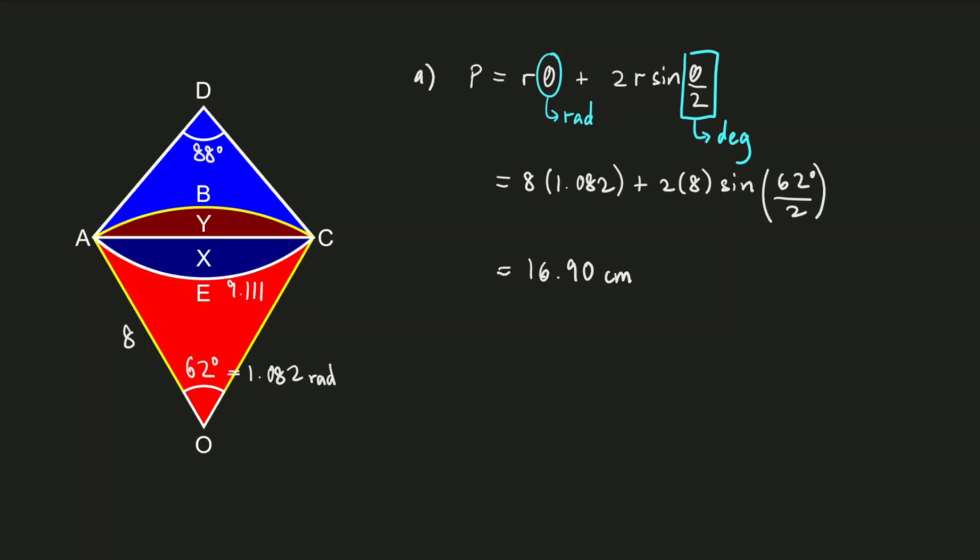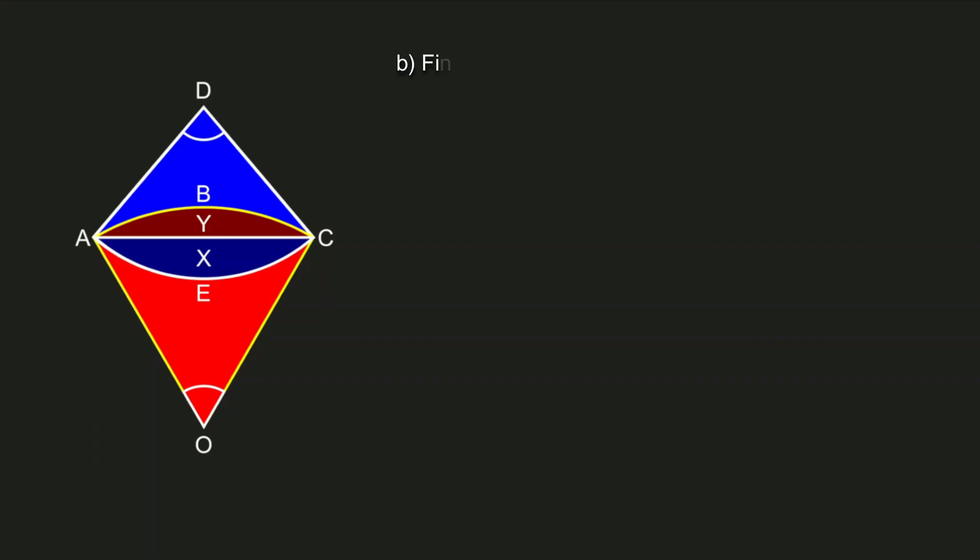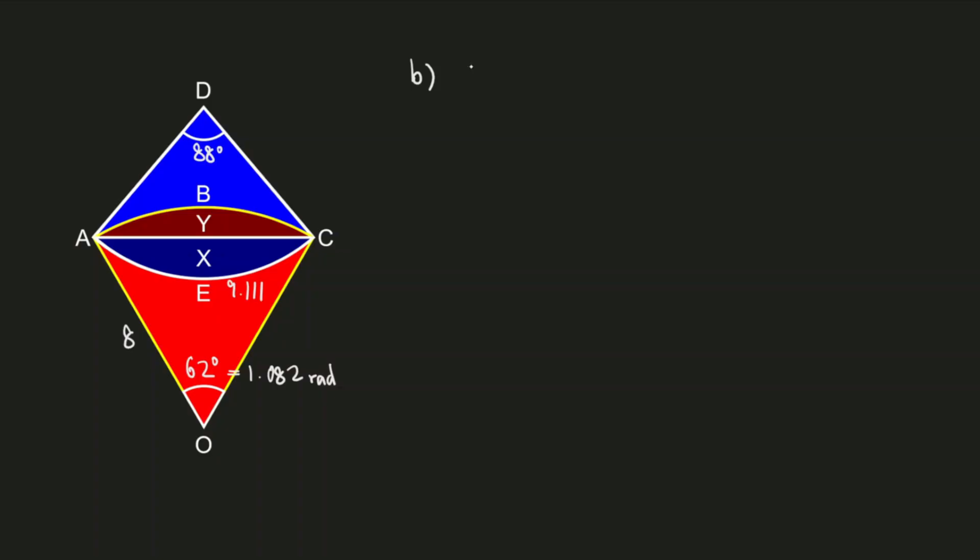Let's try part B: Find the area in centimeter square of region X. By looking at the diagram we know that X is a segment of the sector ACD. Therefore we just need to apply the formula for area of segment: that is 1/2 r² (θ - sin θ). Again, θ here has to be in radians - it is on its own - and the θ with sin θ must be in degrees.